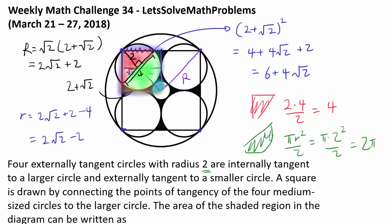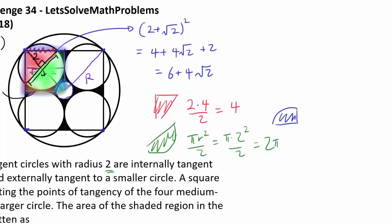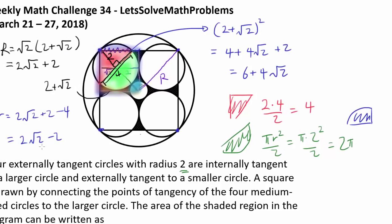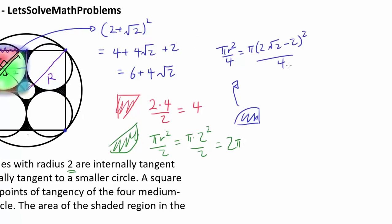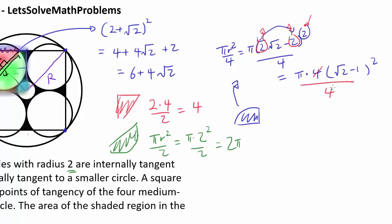We also have to take away the area of the blue quarter circle. The radius is lowercase r = 2√2 minus 2. So that's π r² over 4 = π(2√2 − 2)² / 4. Factoring 2 out: we get π × 4 × (√2 − 1)² / 4. The 4s cancel, leaving π(√2 − 1)² = π(2 − 2√2 + 1) = π(3 − 2√2).